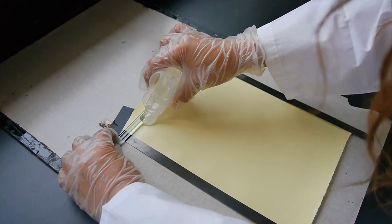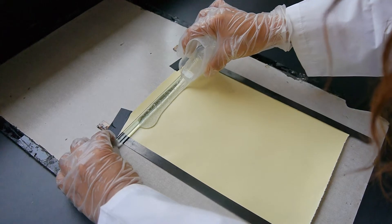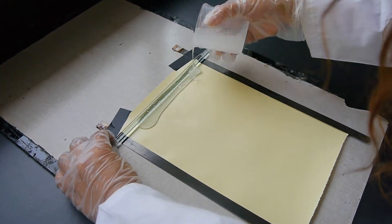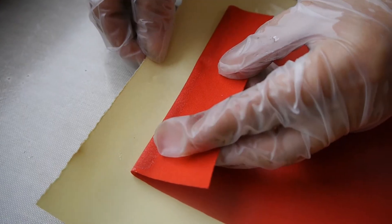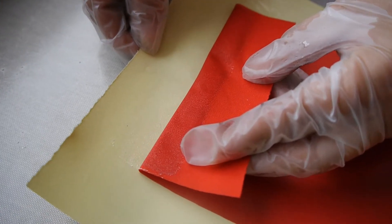In the first step, we put the glue on release paper and use the glass rod to flatten it. Put the fabric on it, wait for a few minutes, then peel the fabric.